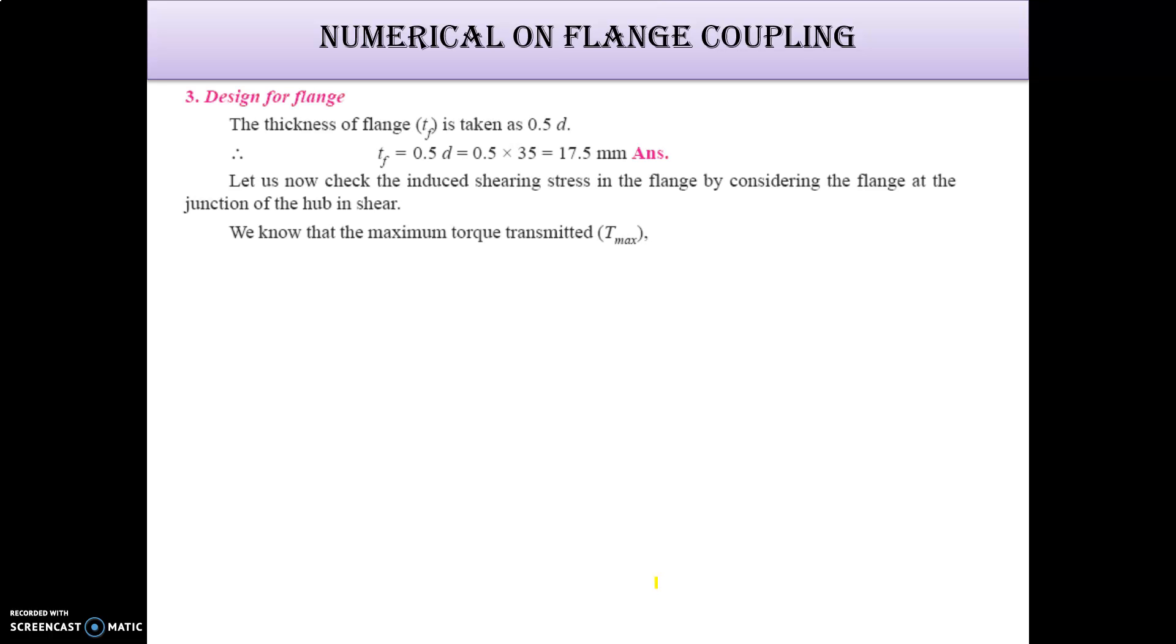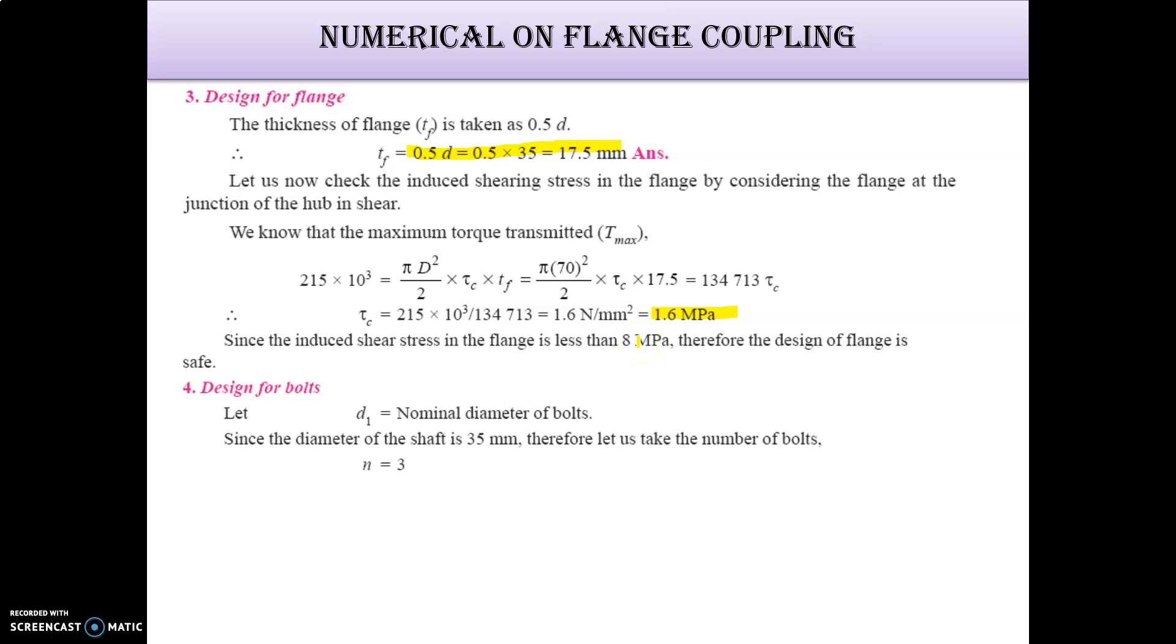Hub is there, now flange. Thickness of flange is 0.5 times D, that is 17.5. So here we are going to find out T equals pi D square by 2 tau C Tf. Shear stress is 1.6 MPa, which is safer, and the maximum limit is 8 MPa, so the coupling is safe.